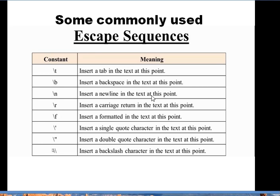There are some commonly used escape sequences. The first one, backslash-t, is used to insert a tabular space in the text — a tabular space is equivalent to four spaces on the screen. Backslash-b is used to insert a backspace. Backslash-n inserts a new line. Similarly, there are other escape sequences shown in this slide which you can go through and need to remember.